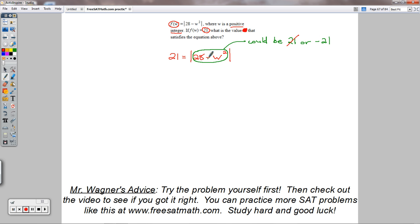So negative 21, how could I get negative 21 from 28 minus a value? Well, w squared, if this is going to be negative 21, would have to be 49.